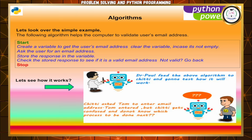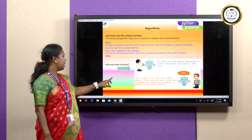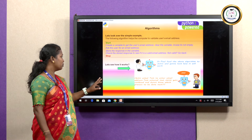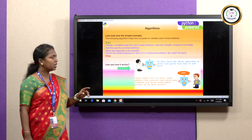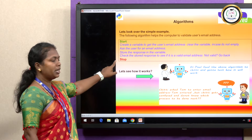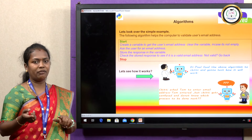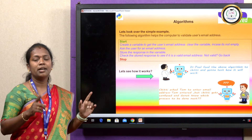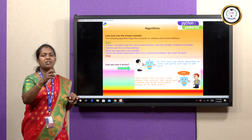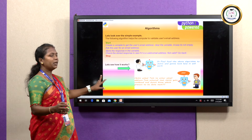Dr. Paul fed the above algorithm to Chitty to test how it works. Chitty asked Tom to enter an email address and Tom entered it, but Chitty got confused — it did not know which process to do next. Because the middle part was not written as a step-by-step process. It was simple English and well-defined, but not effectively computable — it was not a step-by-step process. So it got confused.